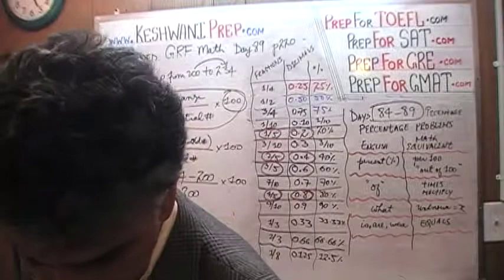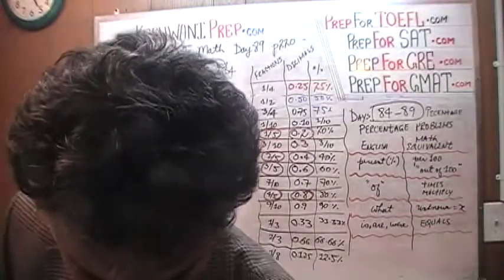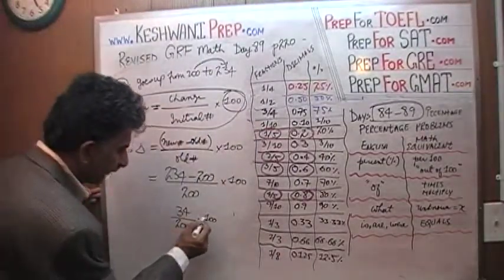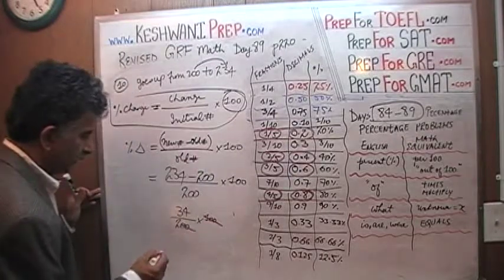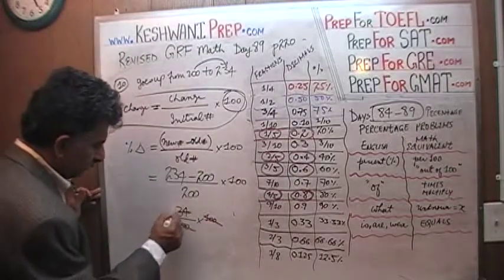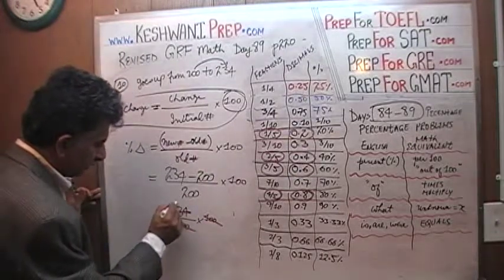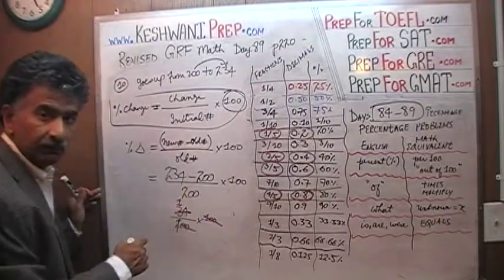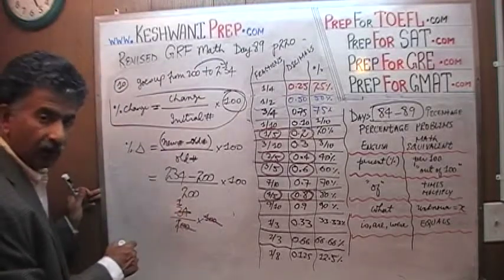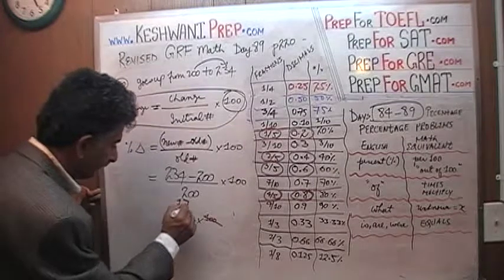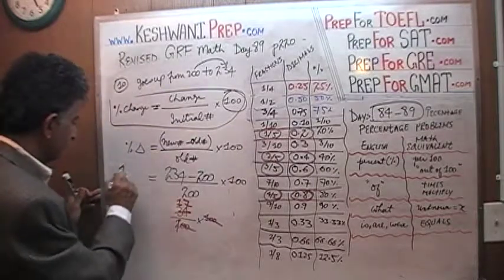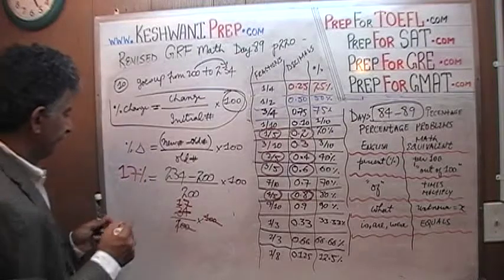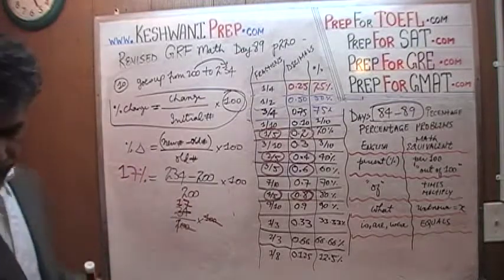Very simple, very straightforward. If you divide top and bottom by 100, two zeros drop out. Divide top and bottom by 2 — how many 2s in a 3? There is one 2 in a 3. The remaining one goes and joins this guy, becomes 14. How many 2s in a 14? There are 7 of them. The answer is 17%.